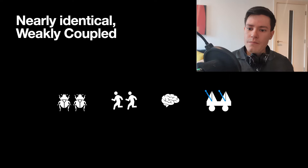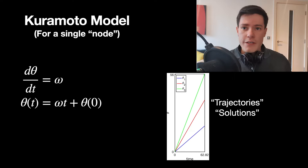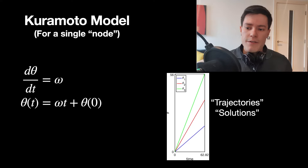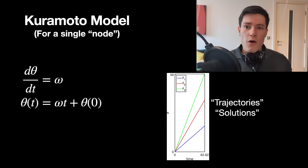With the Kuramoto model, it's useful to start with the equation for a single node, which is actually just the equation of a line. The change in angle theta over time is equal to a constant value, which is the intrinsic frequency omega. The solution is theta at time t equals the intrinsic frequency times time plus an initial condition. So if we have three examples with different intrinsic frequencies, we get trajectories with different slopes.